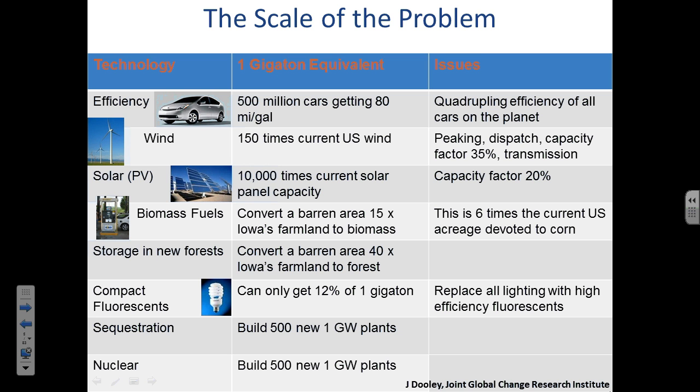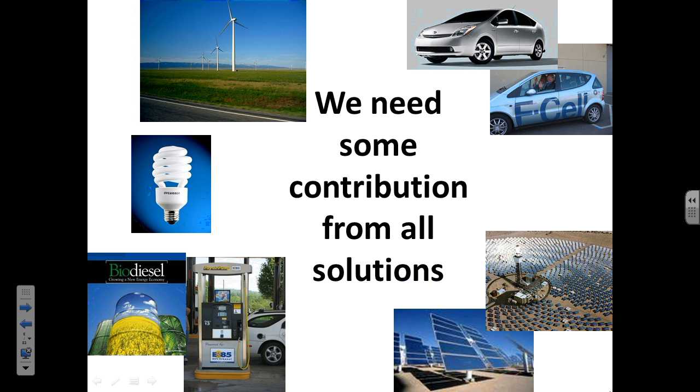You can work your way through this. To save one gigaton or reduce by one gigaton the amount of CO2 going to the environment using just wind, we need to have 150 times the wind capacity in the U.S. right now that we currently have. So take the Judith Gap, any place you see a wind farm, multiply that by 150, and maybe we're onto something here. Each one of these potential solutions has some challenges to it.